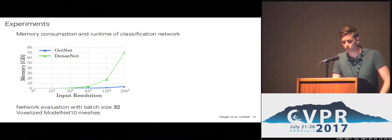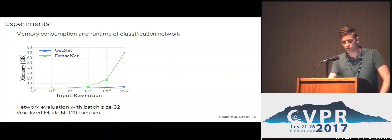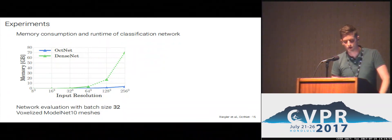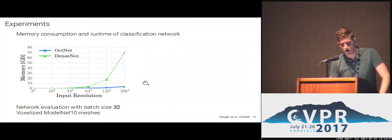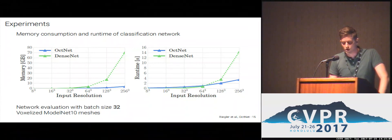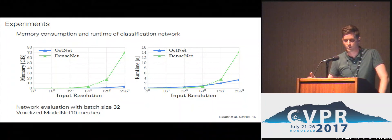What is the impact of this octree structure? Recall that a dense network cannot fit on a single GPU beyond an input resolution of 64³. However, training the same network architecture with OctNet, you can easily fit it up to an input resolution of 256³. Regarding runtime, the dense network has a small benefit for smaller resolutions up to 64³ due to faster memory access patterns, but beyond that our OctNet is much faster.